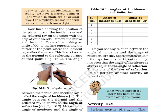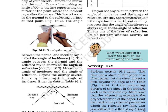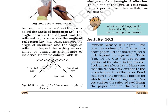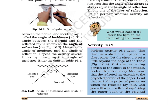Draw lines showing the position of the plain mirror, the incident ray and the reflected ray on the paper. Remove the mirror and the comb. Draw a line making an angle of 90 degrees to the line representing the mirror at the point where the incident ray strikes the mirror. This line is known as the normal to the reflecting surface at that point. The angle between the normal and the incident ray is called the angle of incidence. The angle between the normal and the reflected ray is known as the angle of reflection. Measure the angle of incidence and the angle of reflection, and repeat the activity several times by changing the angle of incidence. Enter the data in Table 16.1.